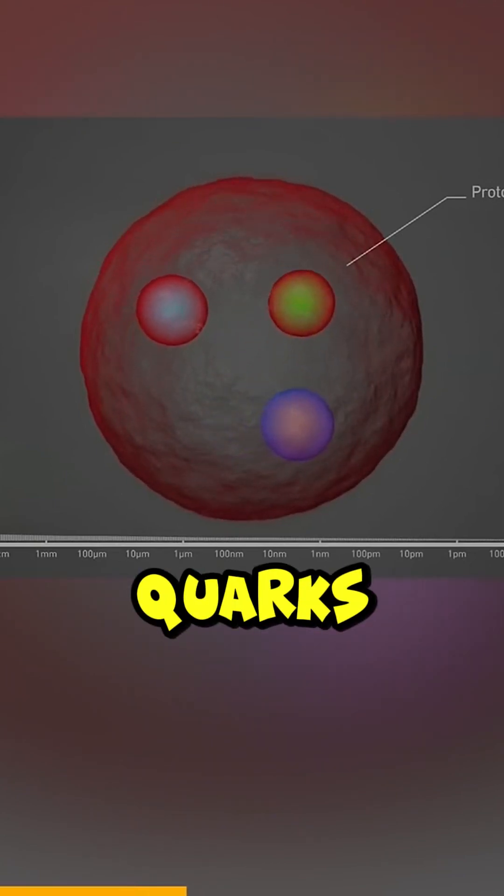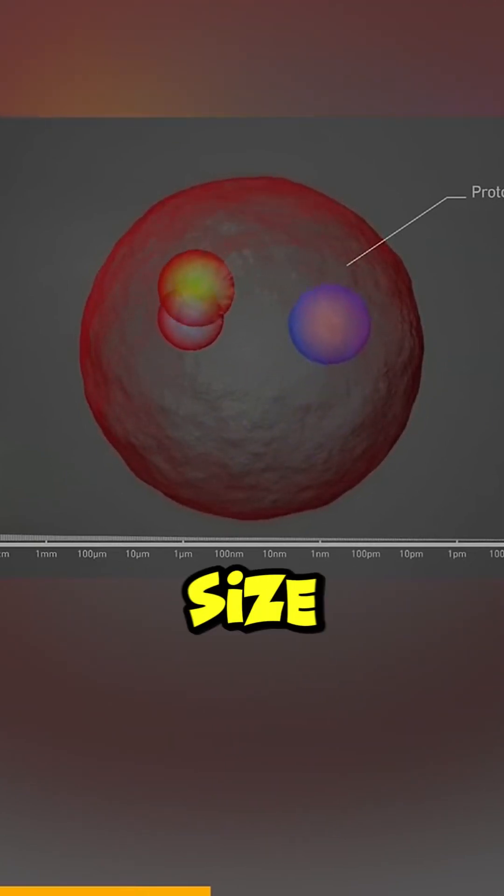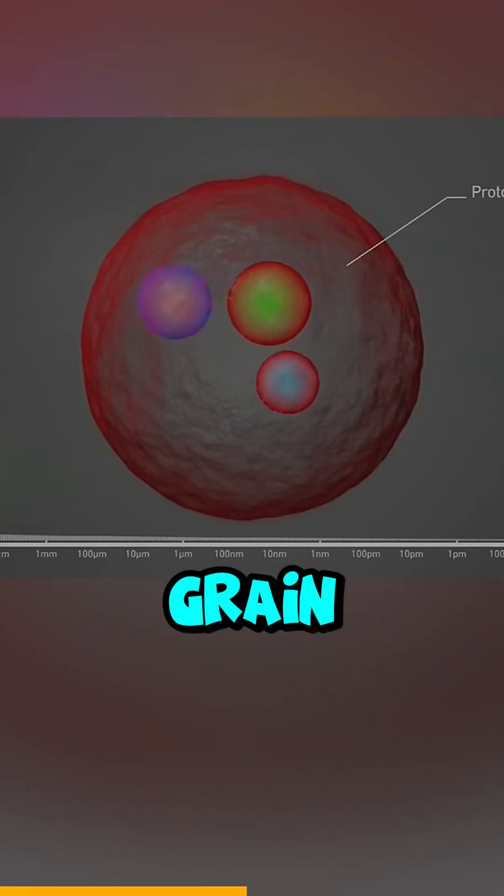Just how small are quarks? If a proton were the size of Earth, a quark would be the size of a grain of sand.